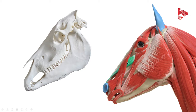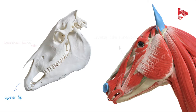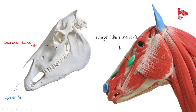The next muscle is the levator labii superioris, or the levator muscle of the upper lip. This muscle originates from the lacrimal bone of the skull and inserts to the upper lip. The tendon from each side meets and inserts to the upper lip. The function of the levator labii superioris is to elevate the upper lip.